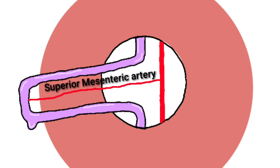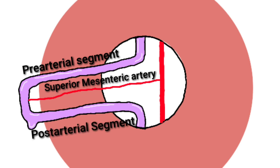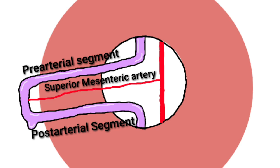This is the superior mesenteric artery, which is a branch of the dorsal aorta, and it supplies the midgut. The area present above the superior mesenteric artery is the pre-arterial segment of the midgut, and the area present below the superior mesenteric artery is the post-arterial segment of the midgut. While discussing the rotation of the gut, the superior mesenteric artery is chosen as the axis for rotation. With respect to this artery only, I am going to discuss the rotation of the gut.